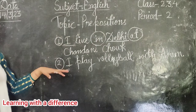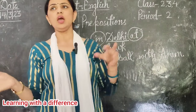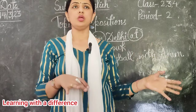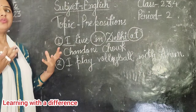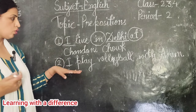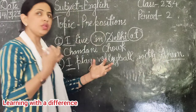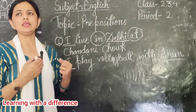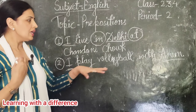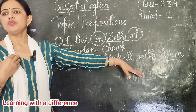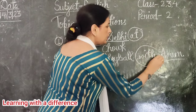See the next sentence: I play volleyball with Aroon. Here 'I' is a pronoun and 'Aroon' is a noun. The relationship between these two is shown through the word 'with.' So 'with' is a preposition.